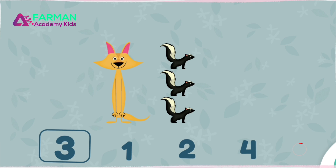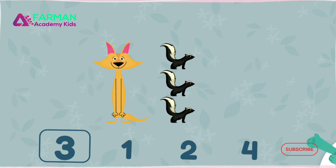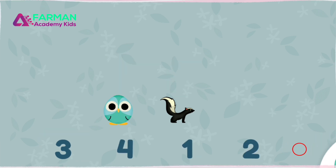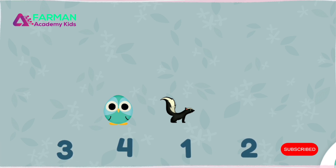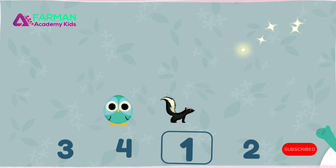How many skunks tall is the owl? One. The owl is as tall as one skunk. Which friend is taller? Sandy is as tall as three skunks, and the owl is as tall as one skunk. So Sandy is taller.